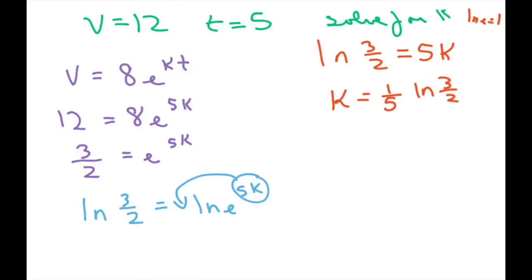Now, we finally plug in t equals 12. So we get volume equals 8 e. Remember, it was right here. Our k is 1 fifth ln of 3 over 2, and then our t is 12. So then we have 12 for our v, and we're going to plug in t equals 12, and what you're going to get is 21.169. And that's it, thank you, have a nice day, bye bye.